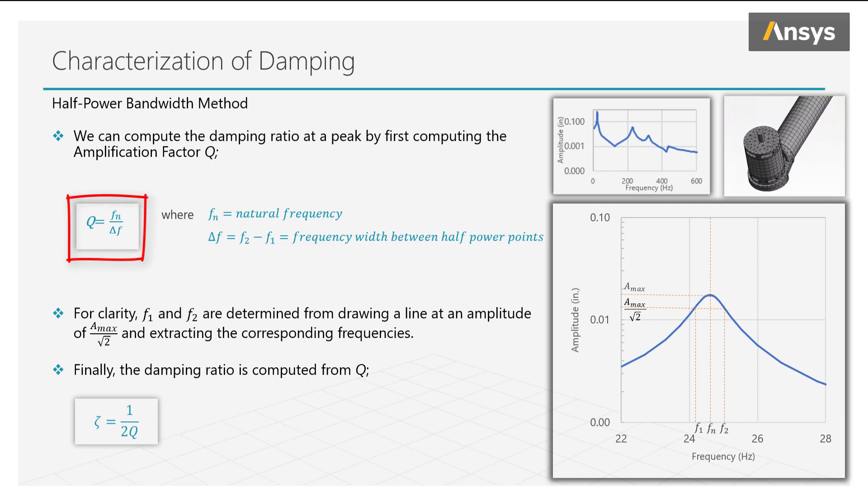Q can be computed using this simple equation. Critical damping occurs at a Q factor of 0.5. Over damped systems have Q less than 0.5, and under damped systems have Q greater than 0.5. We can now compute the damping ratio using this equation.